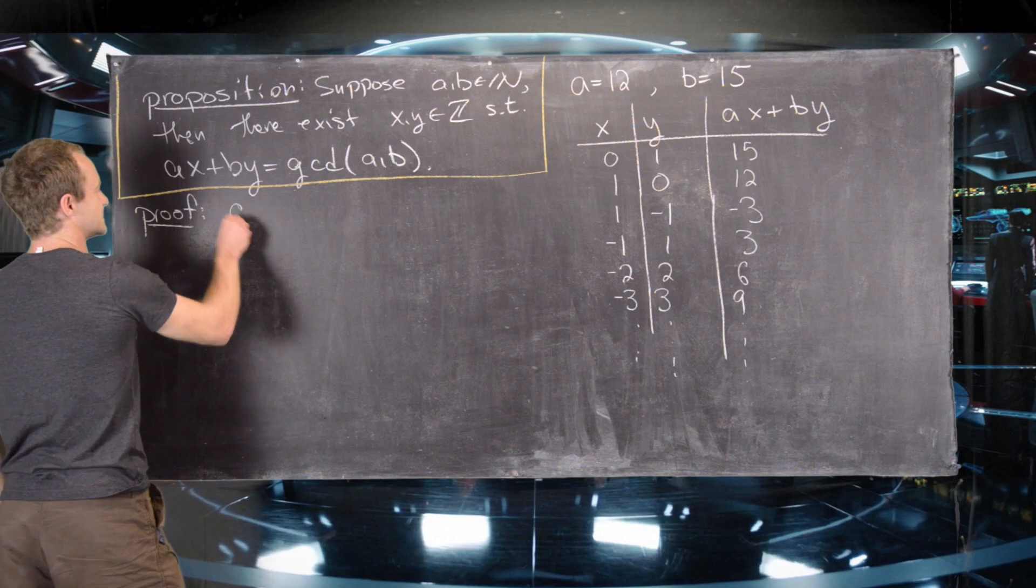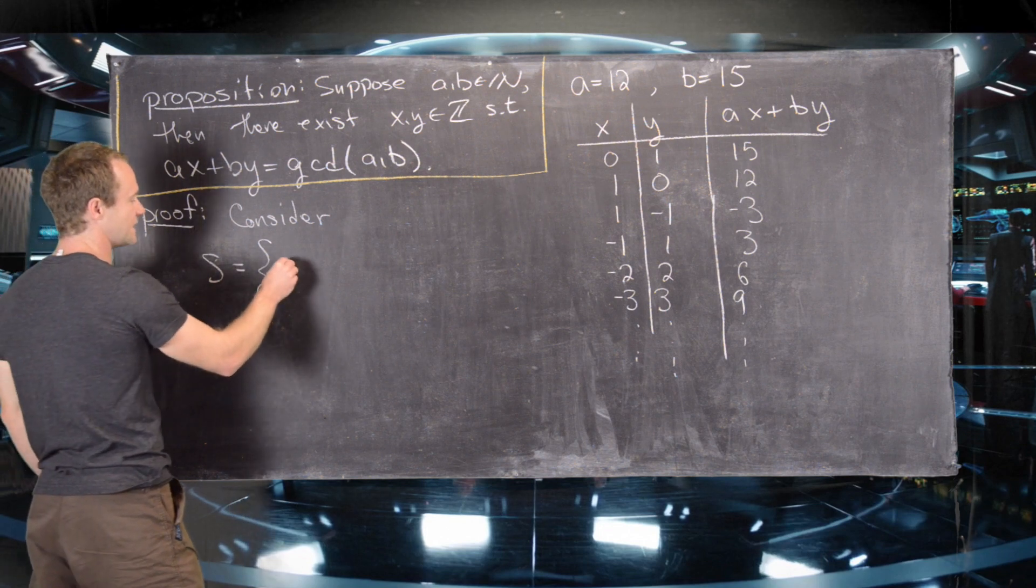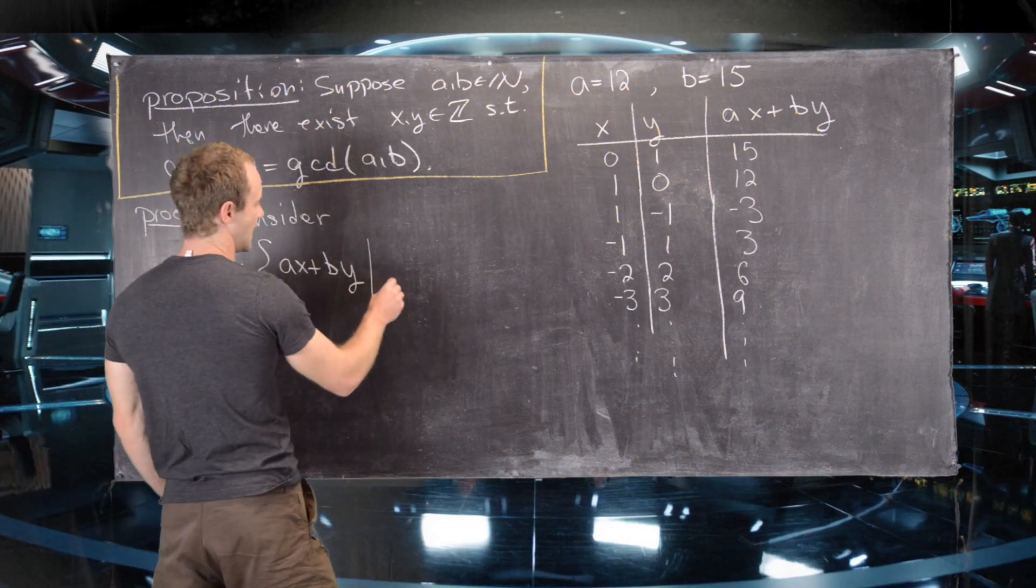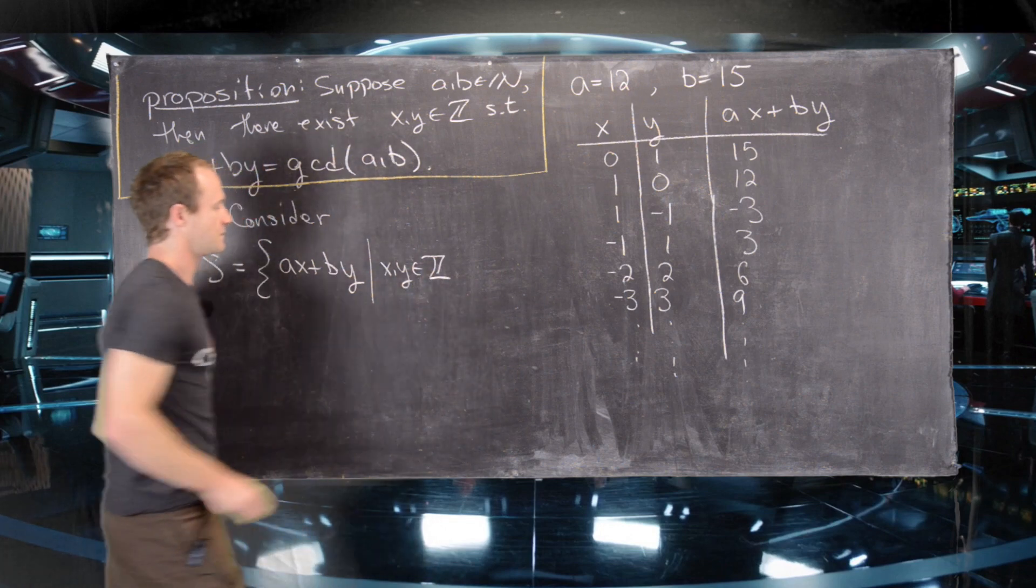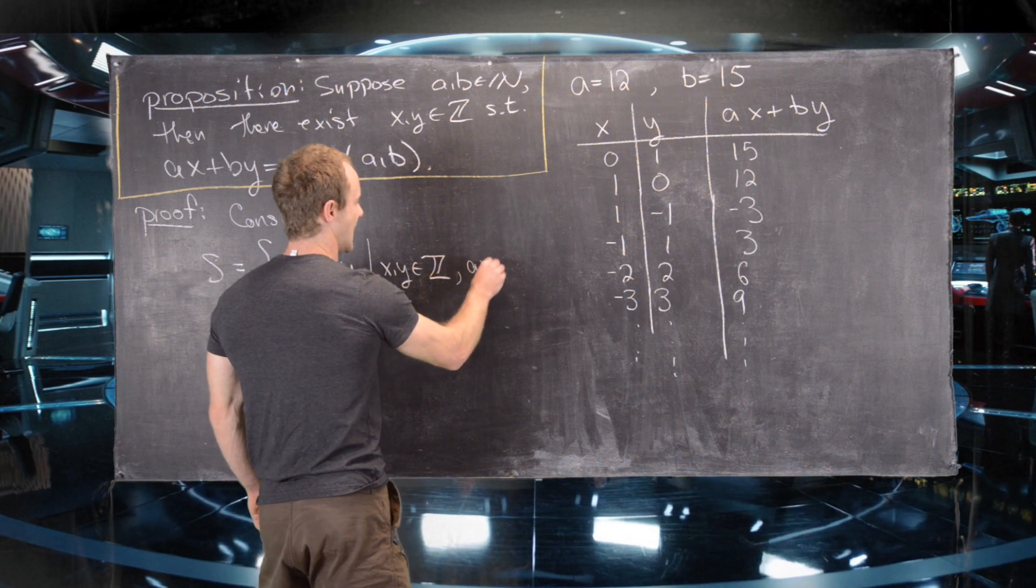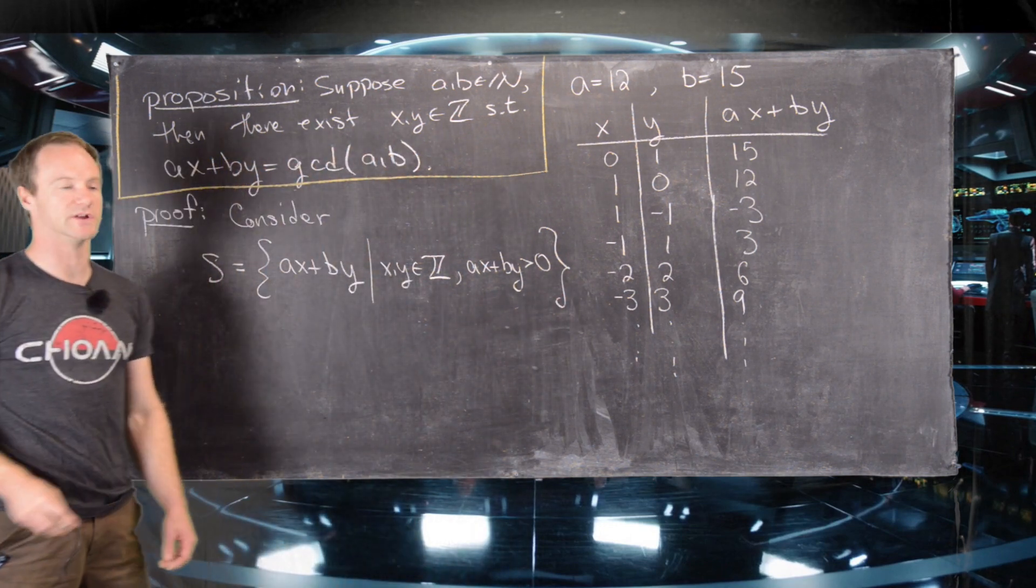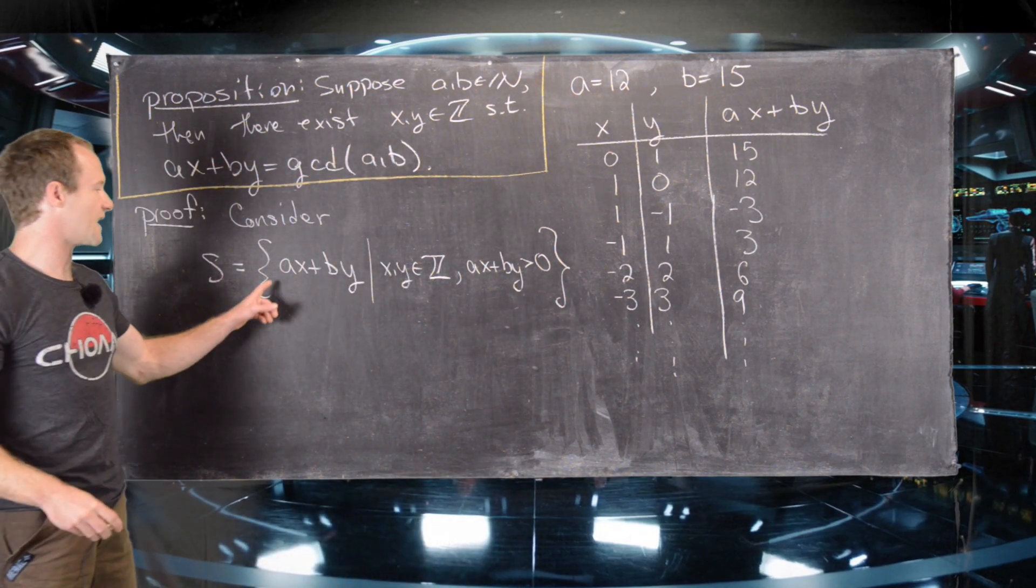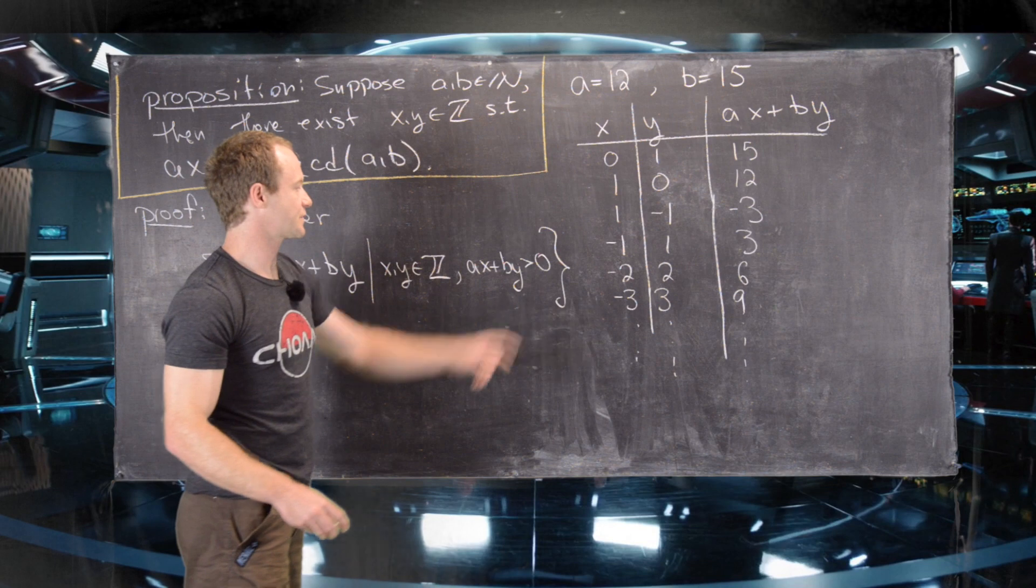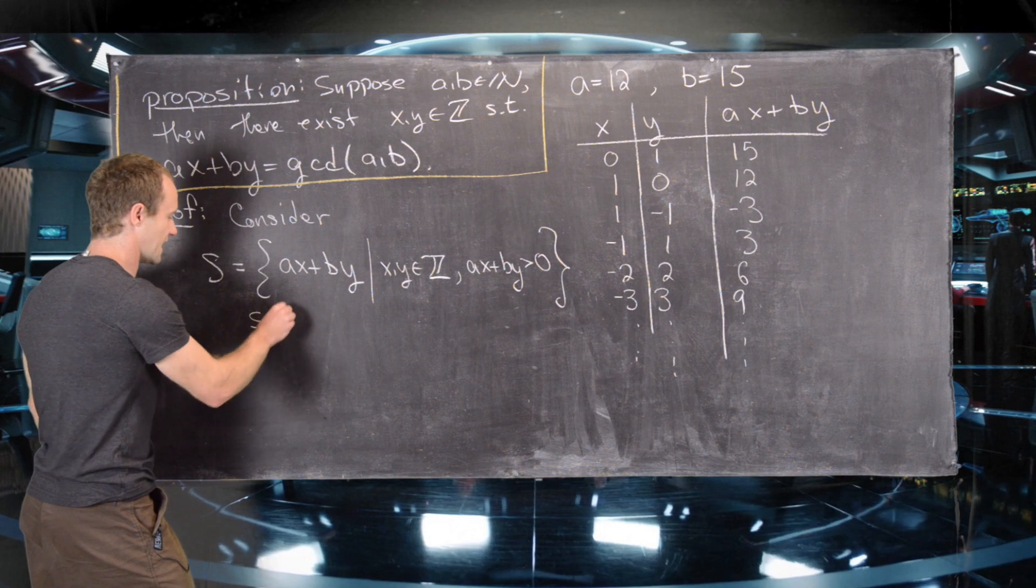So let's consider this set S where S is equal to all linear combinations AX plus BY as X and Y vary over all of the integers, but subject to the condition that AX plus BY is bigger than 0. So now notice that AX plus BY is in general an integer, but since we're taking only parts of this that are bigger than 0, this is going to be a subset of the natural numbers.